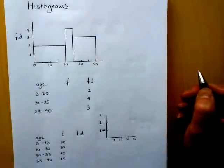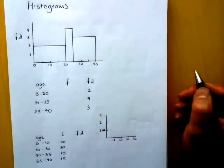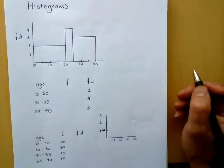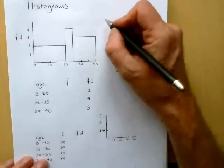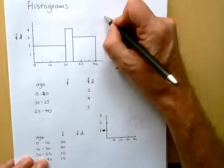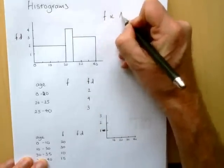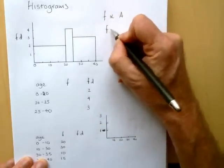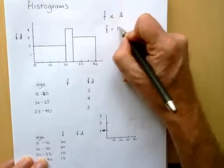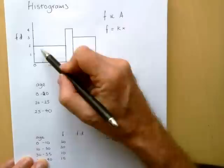Again, it's not telling us much about the frequencies until we know how they connect. Well, as I've said, the frequency is proportional to the area. So the frequency is going to equal something times the area of each bar.